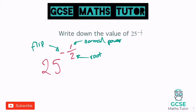Sometimes we might not have a number on the bottom, sometimes we might not have a negative, but if we have them all, we have to think about all three of these pieces. It doesn't matter what order you do it in. I tend to always go for the number on the bottom first, purely because it's easier to do the root of a number than to do the normal power when the number is quite large. I always do the number on the bottom first — that's just personal preference, although you can do it in any order.